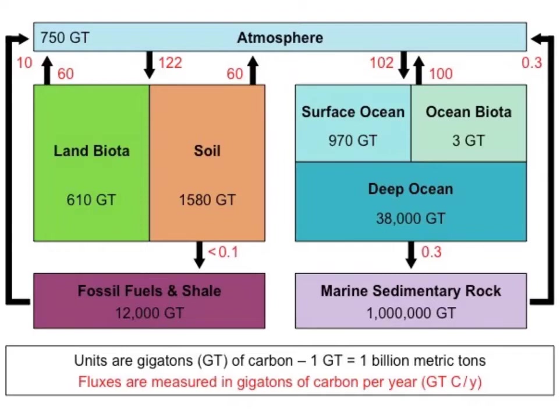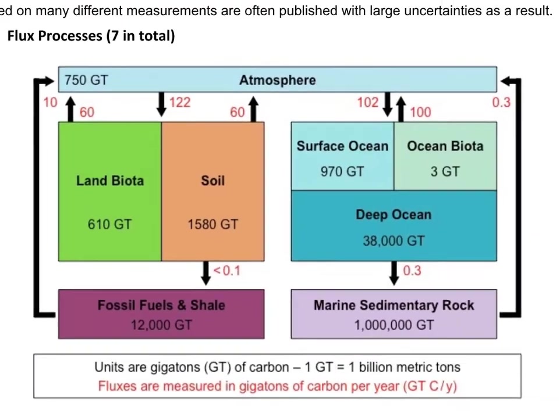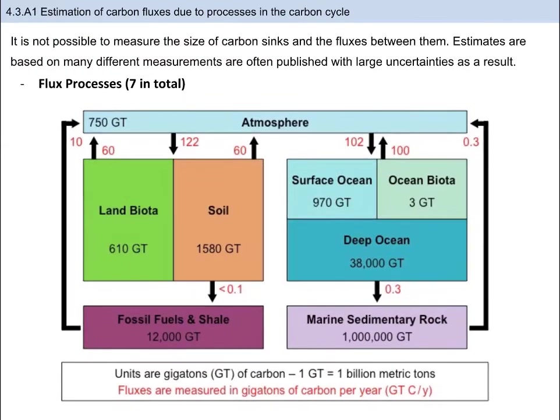There are two key takeaways. First, know the seven fluxes: cell respiration, photosynthesis, combustion, incomplete fossilization, feeding, death, and excretion. The other key is to know the unit of measure for carbon values, which is gigatons of carbon per year. A gigaton is one billion tons.